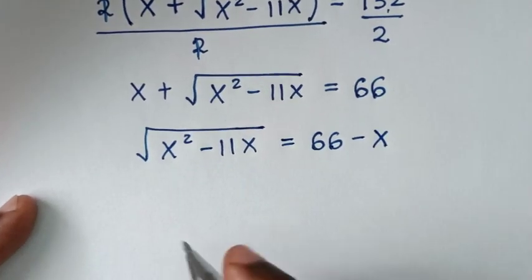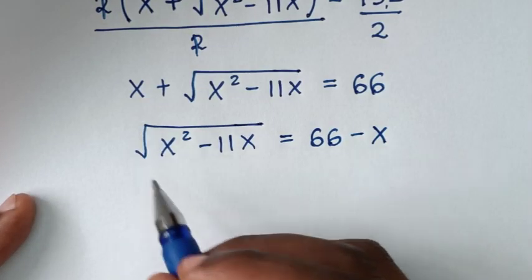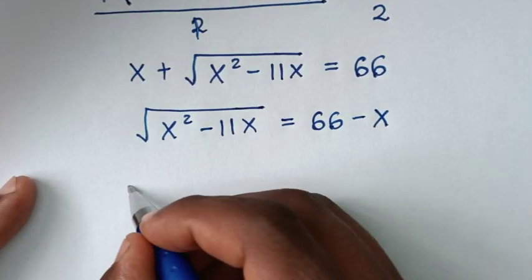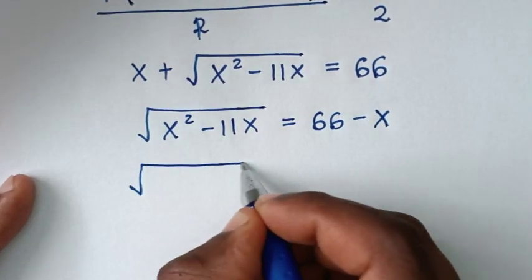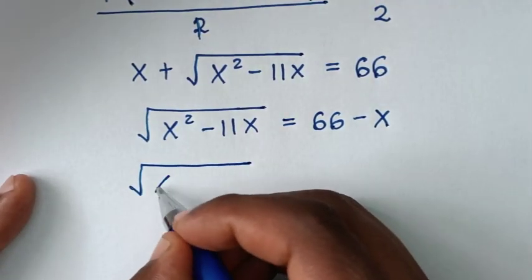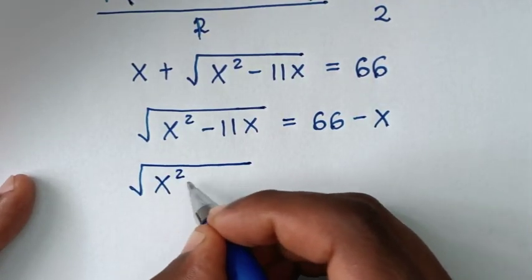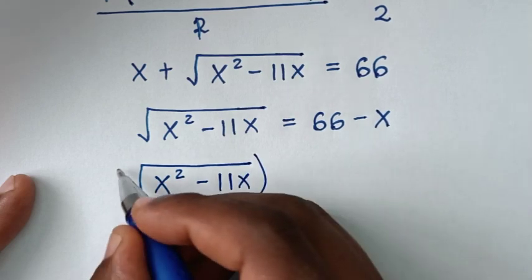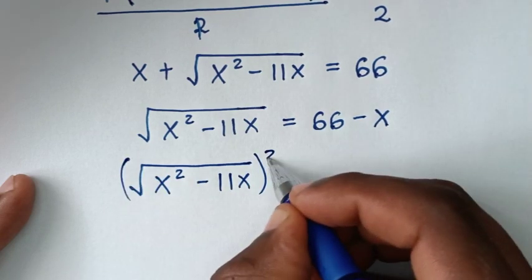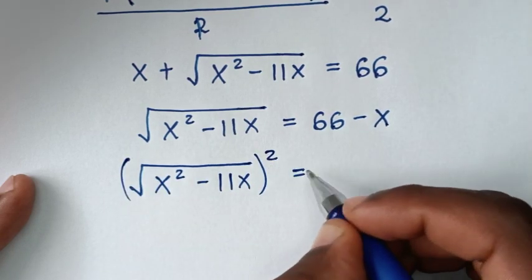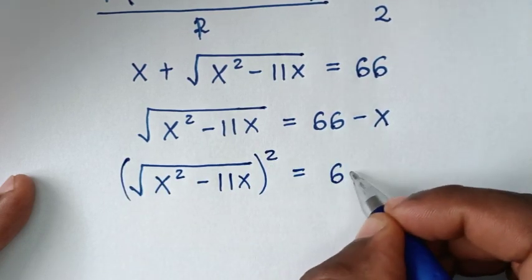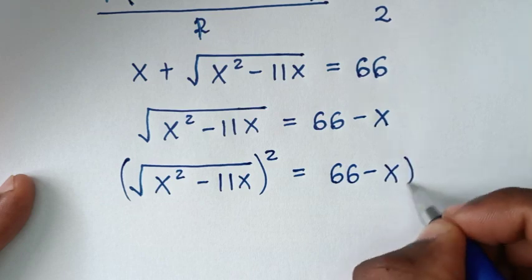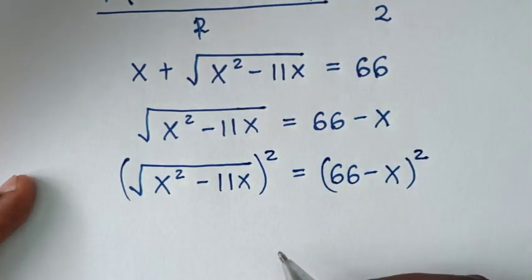To remove the square root, we square both sides. So the square root of x² minus 11x, squared on the left, equals (66 minus x) squared on the right.